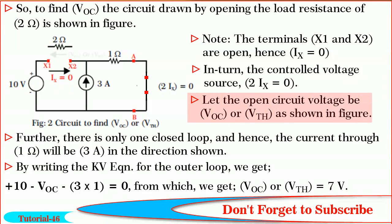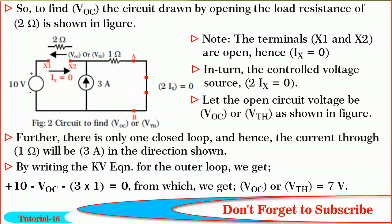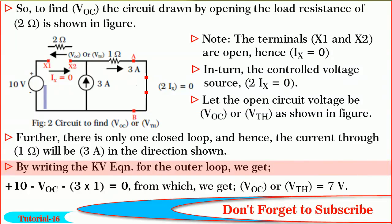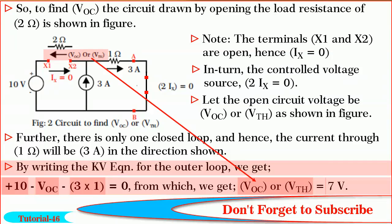Let V-OC or V-Thevenin be the voltage at the terminals X1 and X2. Further, observe that opening the 2 ohm resulted in only one closed loop. Hence, current through 1 ohm will be 3 amperes in the direction shown. By writing the Kirchhoff's voltage equation for the outer loop, we get plus 10 minus V-OC minus 3 amperes into 1 ohm equals 0, from which we get V-OC or V-Thevenin equal to 7 volts.